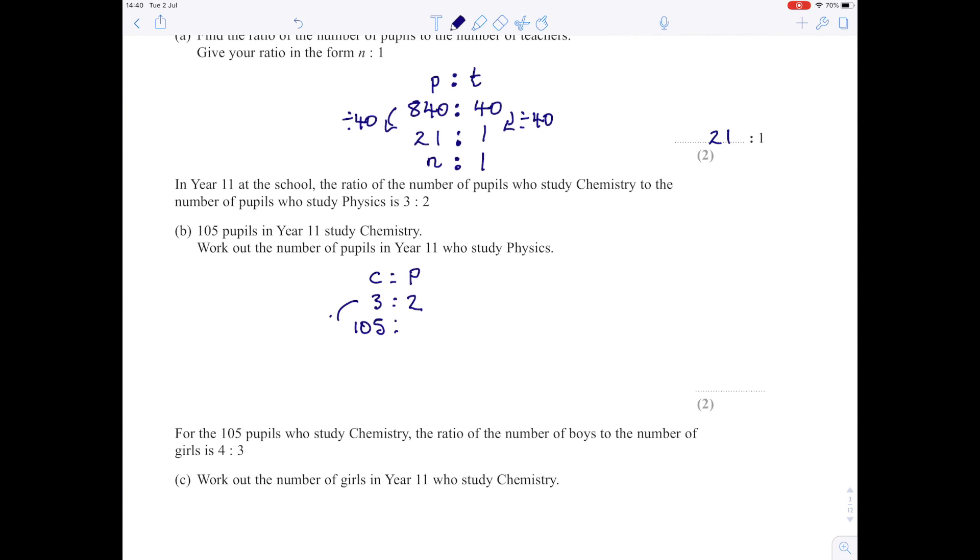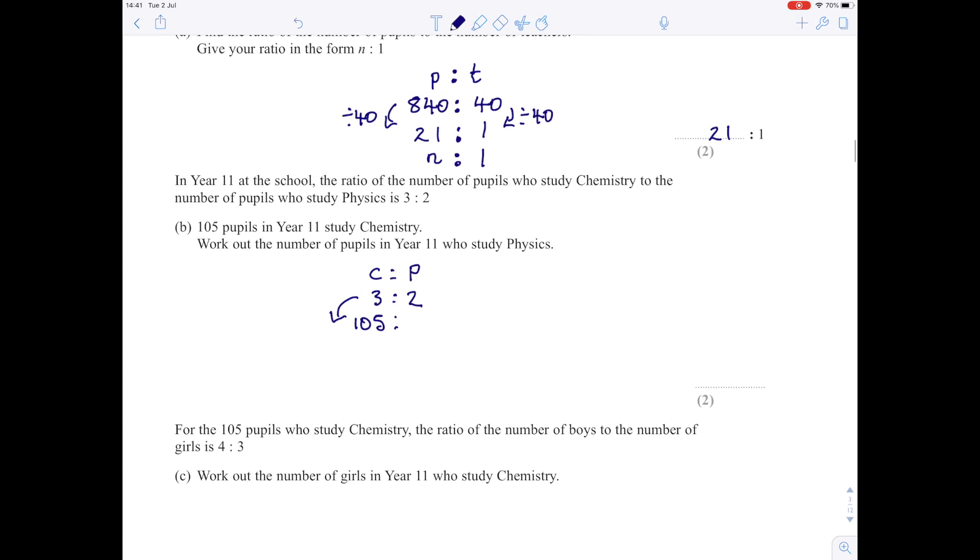Do the same to both sides. What have you multiplied 3 by to give you 105? You've multiplied it by 35. So do the same to the other side, multiply 2 by 35, and that gives you 70. So the number of pupils who study Physics is 70.